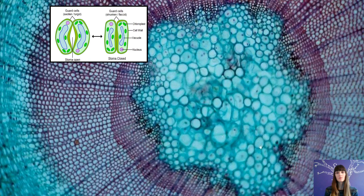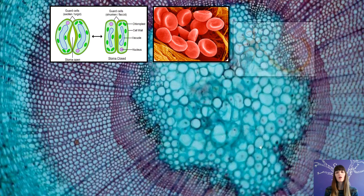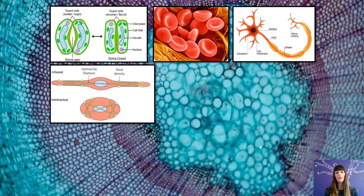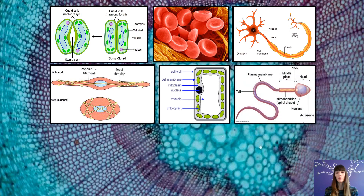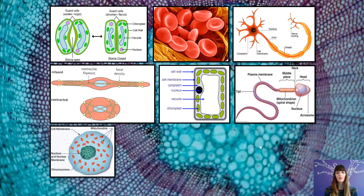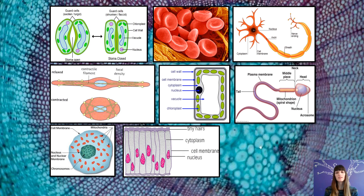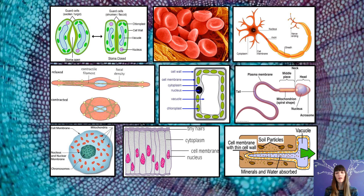These are some different types of specialised cells: guard cells on the bottom of a leaf, red blood cells, nerve cells, muscle cells, a palisade cell which is the plant cell at the top of a leaf where photosynthesis happens, a sperm cell, an egg cell, a ciliated epithelial cell which lines the airways, and a root hair cell which is on the roots of the plant.